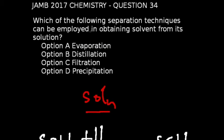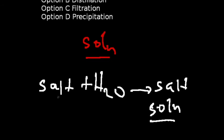Let us look at question number 34 of the JAMB 2017 chemistry exams. Which of the following separation techniques can be employed in obtaining solvent from its solution? I want us to look at a typical solution. If we add water to salt, we're going to be having a salt solution. So how can we separate water that is a solvent from this salt solution?